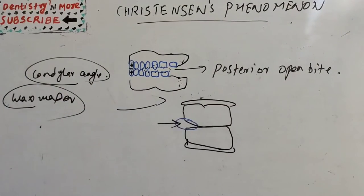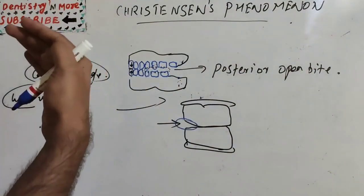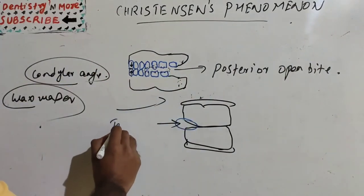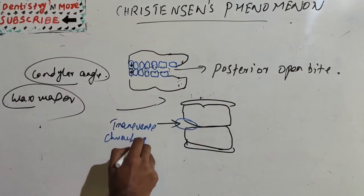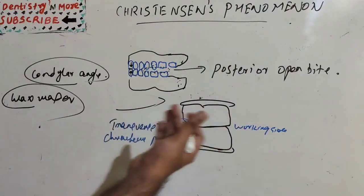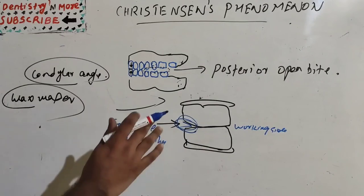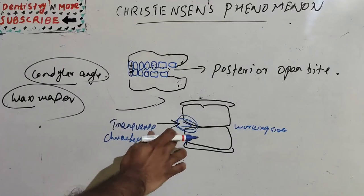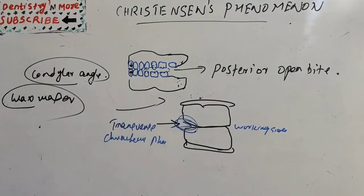There is also a lateral version known as Transverse Christensen's Phenomenon. When we have well-adapted occlusal rims and the patient performs a lateral excursion, a V-shaped gap is created between the rims in the molar region of the balancing side. The working side has no problem, but the lateral movement creates a V-shaped space in the molar region of the non-working or balancing side.